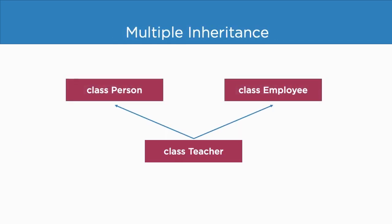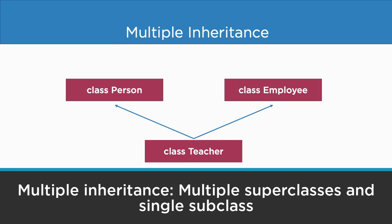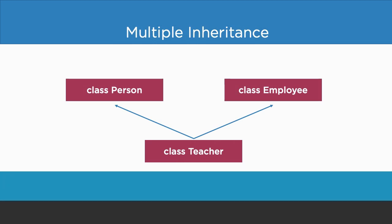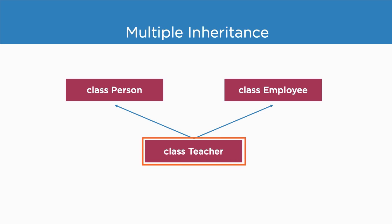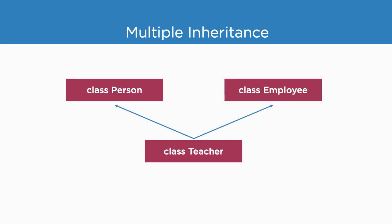Moving on, we have multiple inheritance. In this type of inheritance, there is only one subclass but multiple superclasses. For example, a teacher is a person, and a teacher can also be an employee. So this subclass of teacher can inherit from the superclass of person and the superclass of employee.